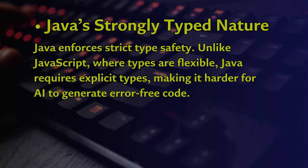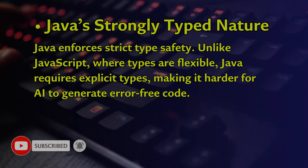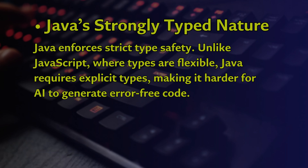The first challenge is Java's strongly typed nature. Java enforces strict type safety, and unlike JavaScript where types are flexible, Java requires explicit types like String and for instances of classes like List or ArrayList, which makes it harder for AI to generate error-free code.